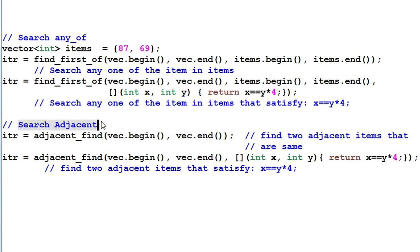Search adjacent. Adjacent find finds the first two adjacent items that are the same. And it also has a generalized form.